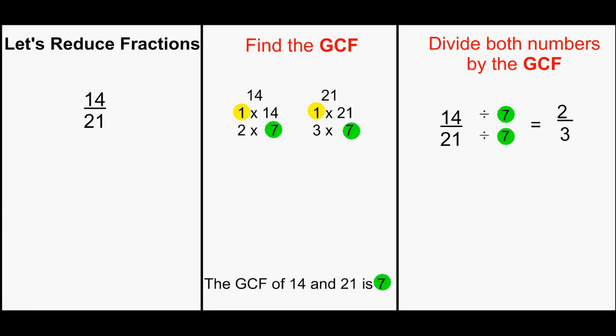Let's divide both numbers by the GCF 7. 14 divided by 7 equals 2. 21 divided by 7 equals 3. So our fraction 14 21sts reduces to 2 thirds.